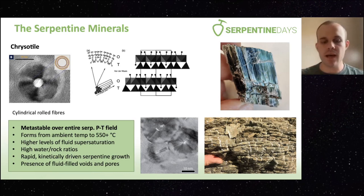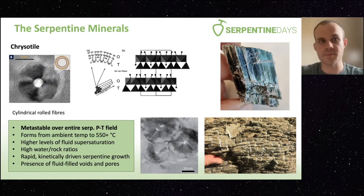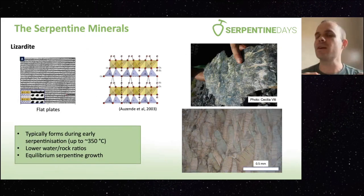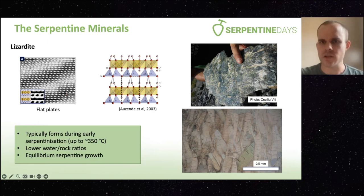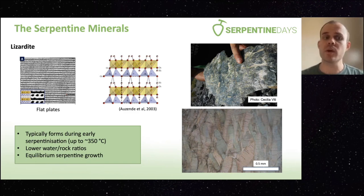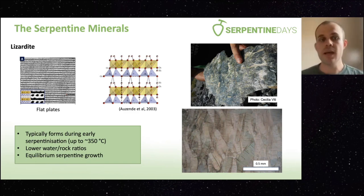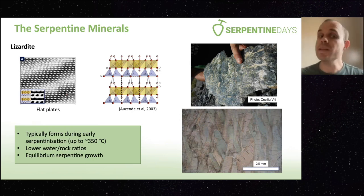When chrysotile forms in its beautiful elongate fibrous form, you get a rock you're probably quite familiar with — asbestiform chrysotile. Moving on to lizardite: this is really our classic phyllosilicate within the mineral group. We have these flat platelets, and it forms most typically during early serpentinization, probably related to the fact that it's favored when we get lower water-rock ratios. It is really indicative, most typically, of equilibrium serpentine growth.